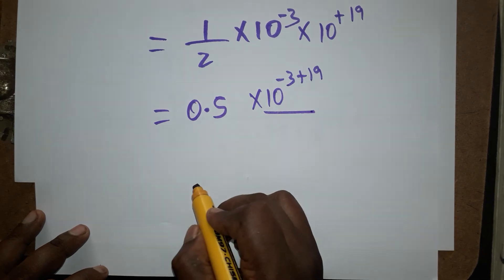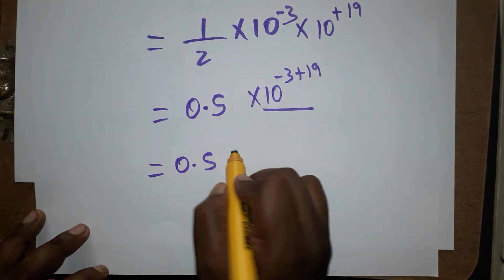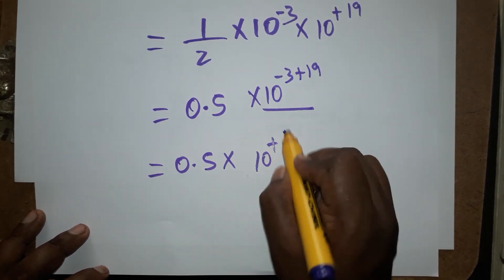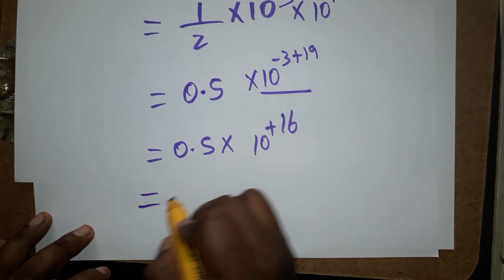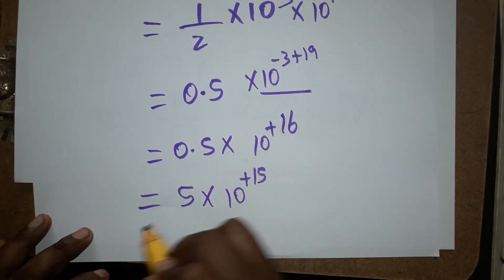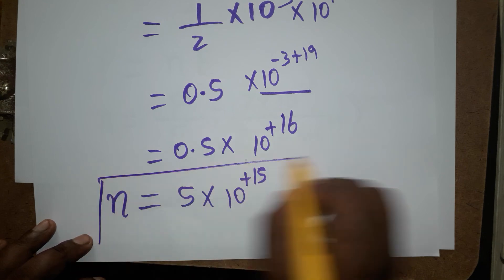This calculation will get 0.5 into 10 power plus 16. One decimal moved gives 5 into 10 power plus 15. So we found n value, number of photons emitting per unit time.